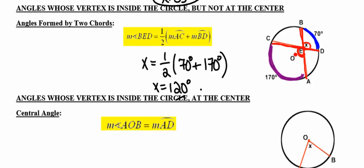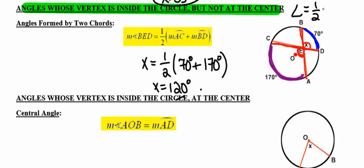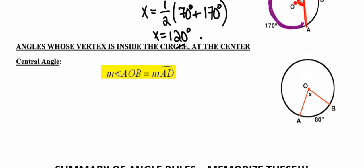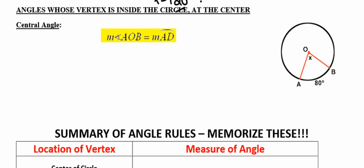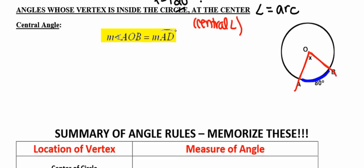The rule any time you have an angle whose vertex is inside the circle but not at the center: the degree measure of the angle equals half the sum of the two arcs. And any time you have an angle whose vertex is inside the circle and at the center, that's a central angle — review from yesterday. The degree measure of the angle equals the degree measure of the intercepted arc, arc AB, which is 80 degrees, so X equals 80 degrees.